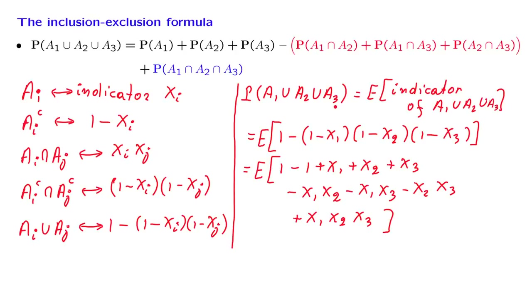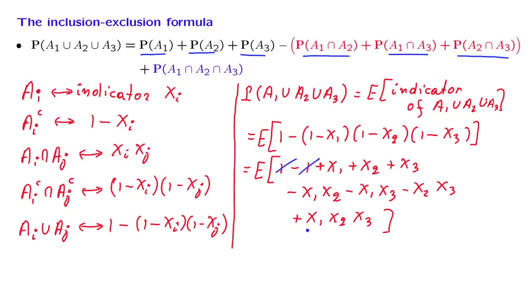The probability of this event equals the expectation of this random variable. The ones cancel out. The expected value of x1 for an indicator variable is just the probability of that event, and similarly for x2 and x3. The expected value of x1 times x2 is the indicator of the intersection, so its expectation is the probability of a1 intersection a2. Similarly for the other pairwise terms. Finally, x1 times x2 times x3 is the indicator of a1 intersection a2 intersection a3, and its expected value is that probability. Therefore, we have established exactly the formula we wanted.